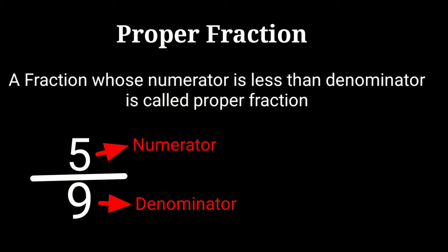5 is lesser than denominator 9. So whenever in a fraction the numerator, the upper number, is smaller and the denominator, the lower number, is greater, then this fraction is called proper fraction.